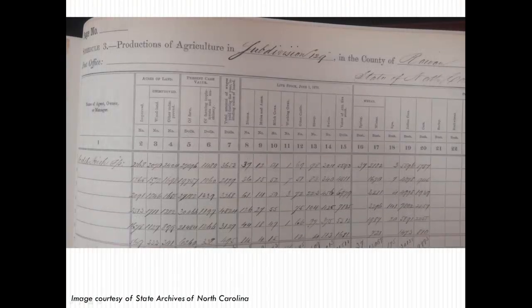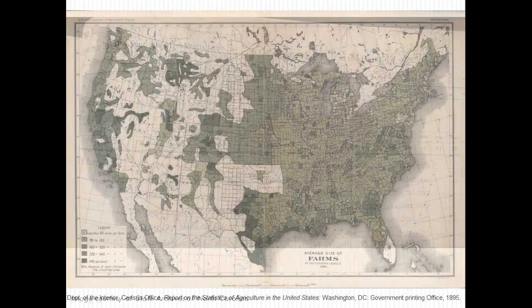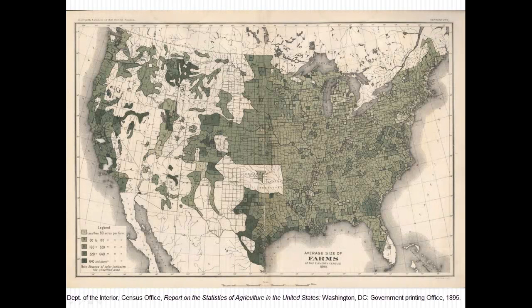It is important to remember that not every farm was listed. There were limits on production, profit, and acreage, with the criteria for inclusion changing from census year to census year. The 1850 and 1860 schedules gathered information on farms with an annual production value of at least $100. The 1870 and 1880 schedules recorded farms that were a minimum of three acres, unless the small farm produced at least $500 worth of produce sold in the census year.